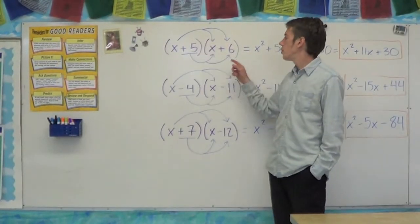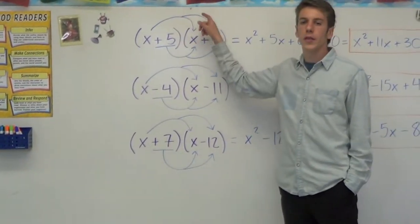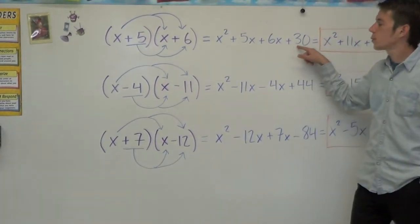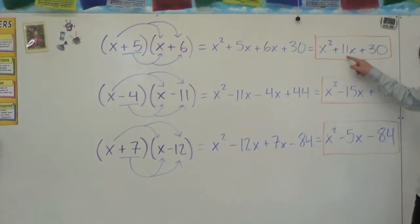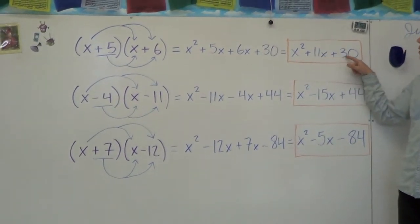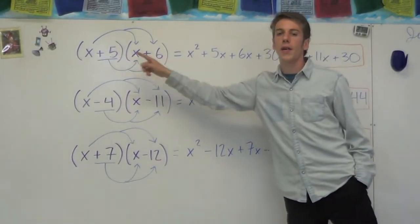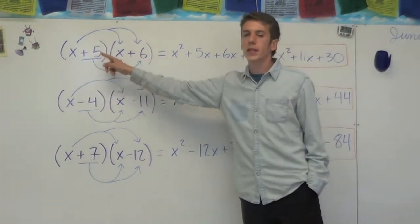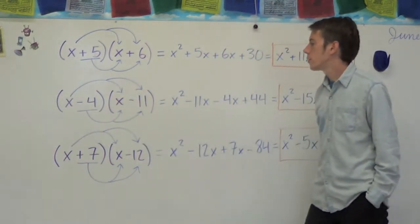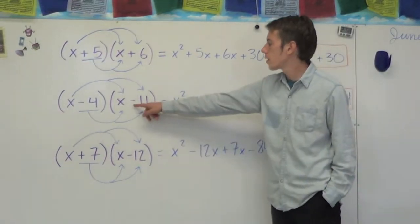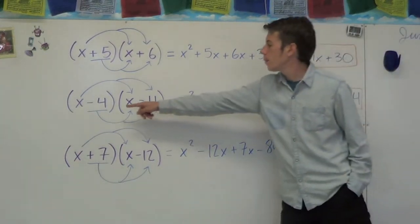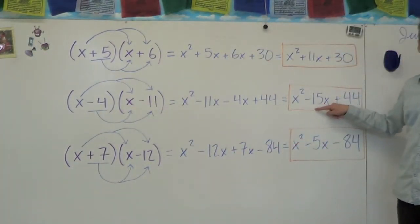So when you multiply two polynomials like (x + 5)(x + 6), you do the double rainbow. After you combine the like terms, we got x² + 5x + 6x + 30. We have to combine 5x and 6x to get 11x. You'll notice when you expand it out you get x² + 11x + 30. And 30 is the product of 6 and 5, and 11 is the sum of 6 and 5. In the second example, (x − 4)(x − 11): the product of negative 11 and negative 4 is positive 44, and the sum of negative 4 and negative 11 is negative 15. So the pattern holds.